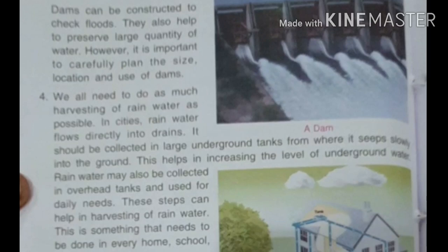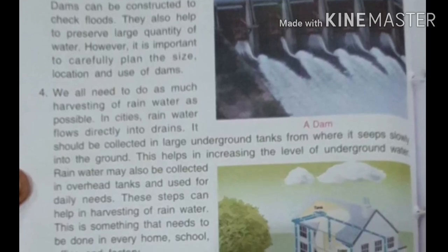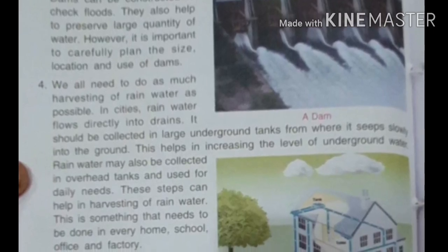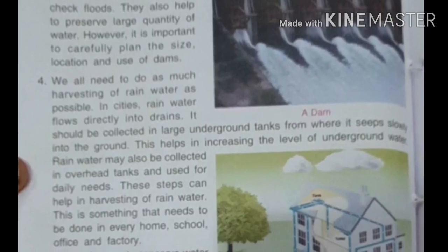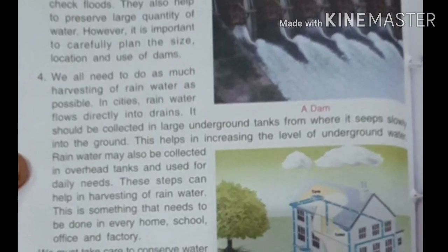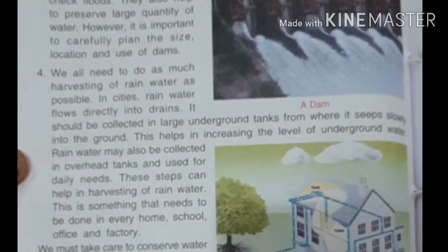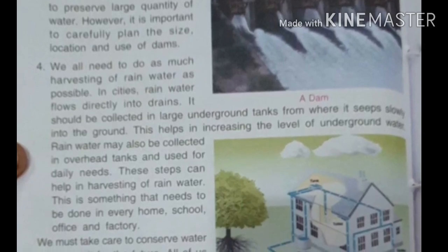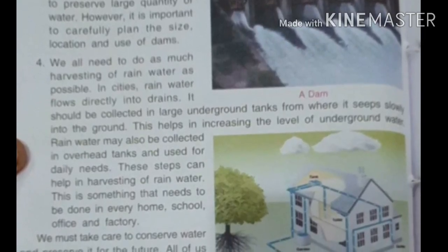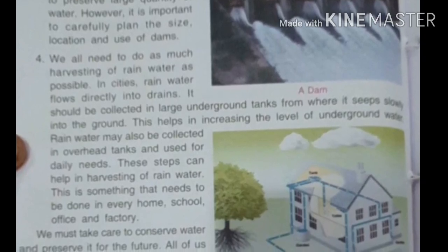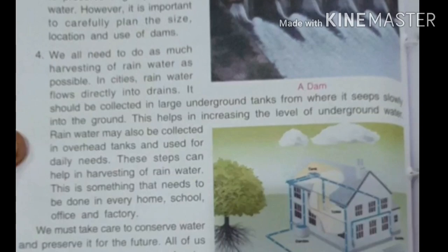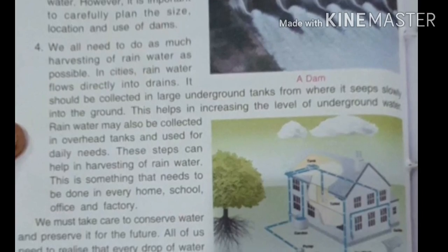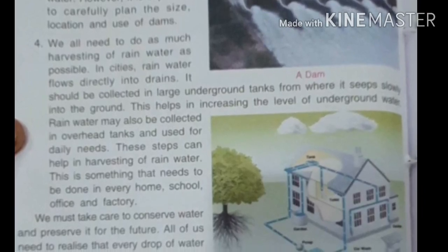In cities, rainwater flows directly into drains, but that water should be collected in large underground tanks. We can do rainwater harvesting in two ways: one in which we build tanks from where water seeps into the ground and increases the underground water level, and another where we store water in underground tanks connected to pipes for watering plants, flushing, and other daily needs. Rainwater harvesting should be done in every home, school, office, and factory.